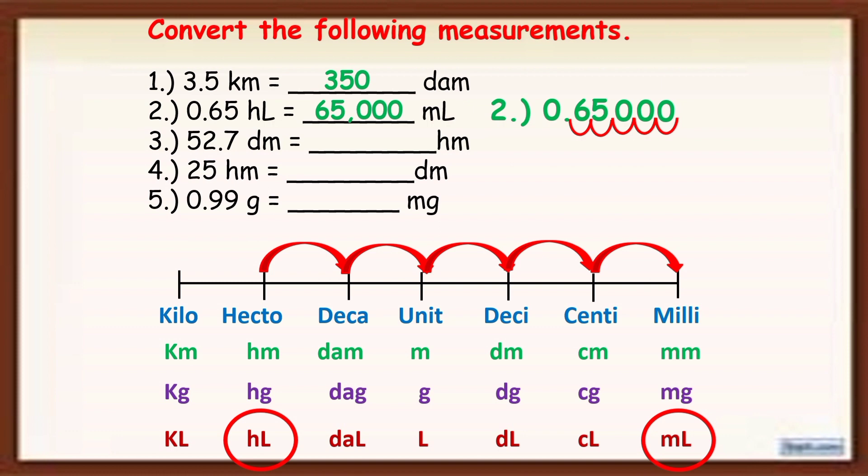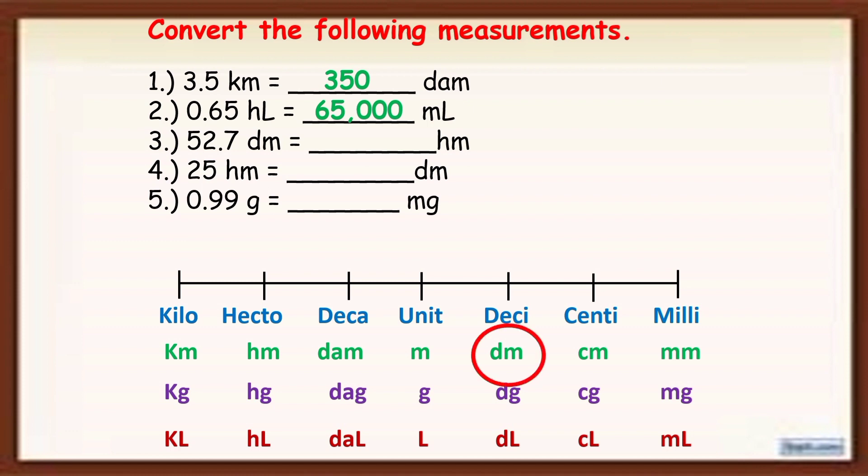So now, let's proceed to example number 3. 52.7 DM is equal to blank HM. So let's count how many units from DM to HM. So 1, 2, 3. Meron tayong 3 units. Now, let's convert 52.7. So since ang movement ng DM to HM ay papunta sa left, dito sa 52.7 from the decimal point, mag-move tayo ng 3 units papunta sa left. So 1, 2, 3. Then add 0s doon sa missing place value. And don't forget na kung saan nag-stop ang movement natin, doon natin ilalagay ang decimal point. So 52.7 DM is equal to 0.0527 HM.